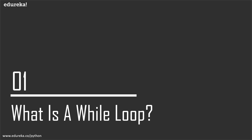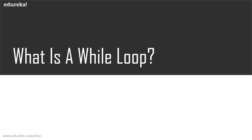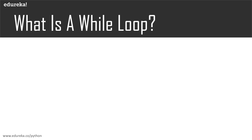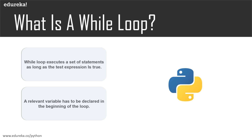Without wasting any more time, let's try to understand what are while loops in Python. A while loop in Python is used to iterate over a block of code as long as the test expression is true. A user has no idea about the number of iterations that will take place during execution. It can be used in problems where a condition needs to be satisfied in order to execute multiple statements.